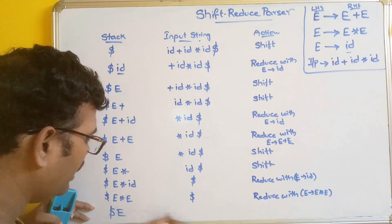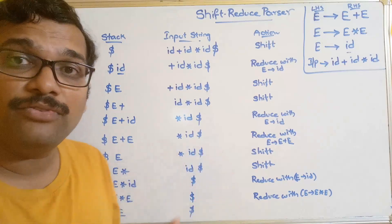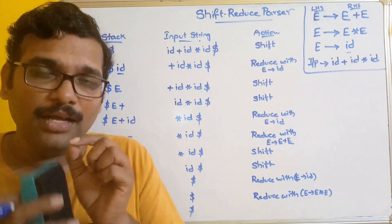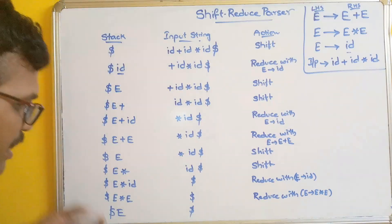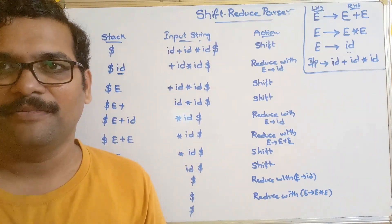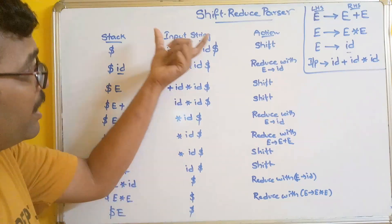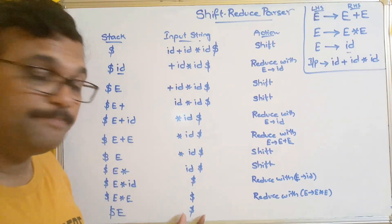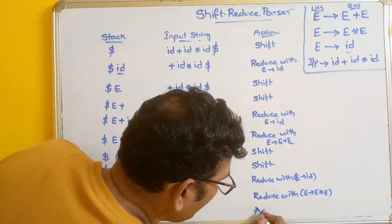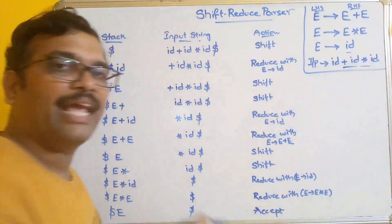A small correction on the accept condition: the parse is accepted not when both contain dollar, but when the stack contains only the start symbol and the input string has only dollar remaining. Here the start symbol is E, so with dollar E in the stack and dollar in the input, we say accept. This confirms that the input string ID plus ID star ID can be parsed by this context free grammar.